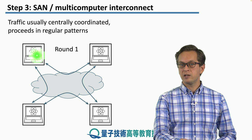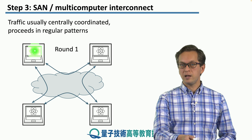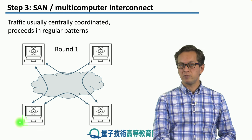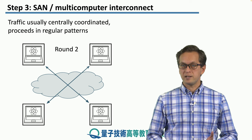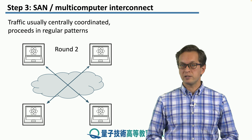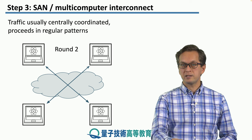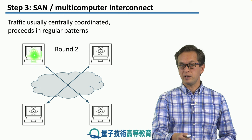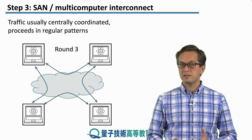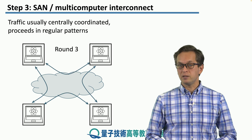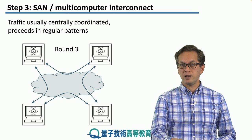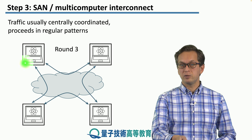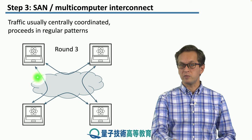For example, this node talks to its neighbor to the side and its neighbor below. In the second round, they perform their next computational step and then pass the information diagonally to their partners. Round three is the same as round one — they repeat their computational step and again talk to their nearest neighbors.